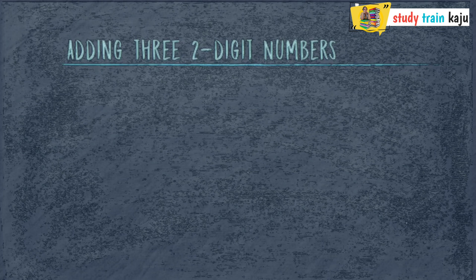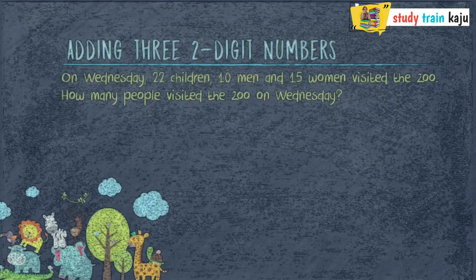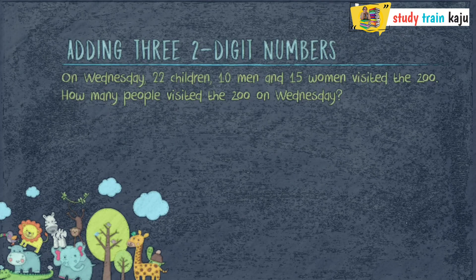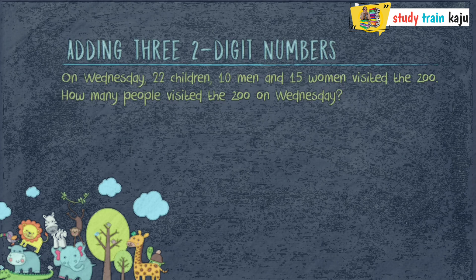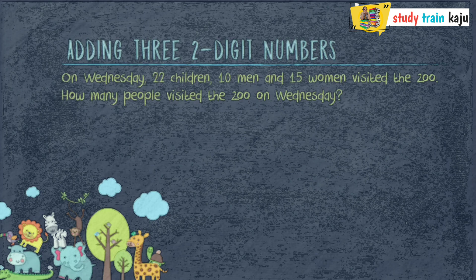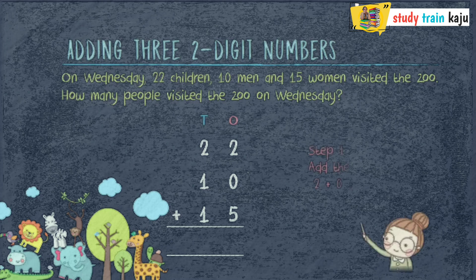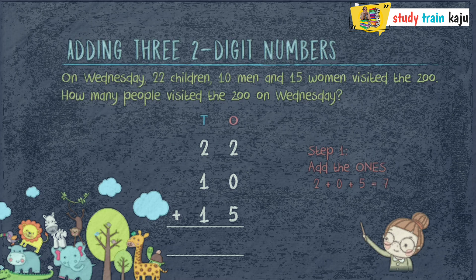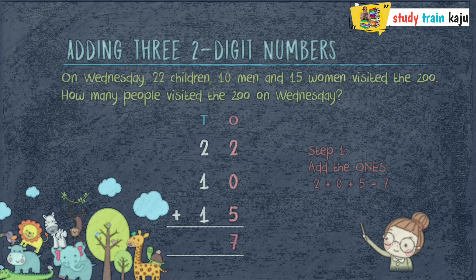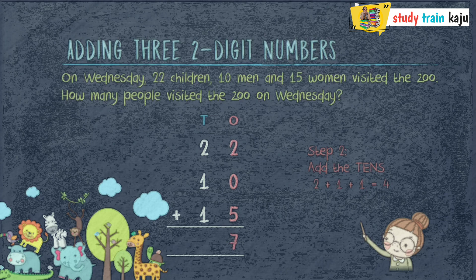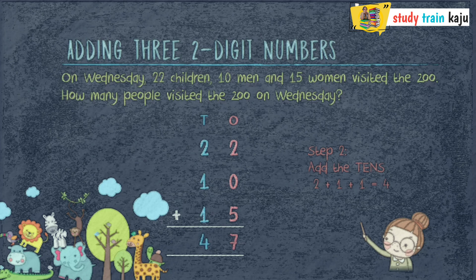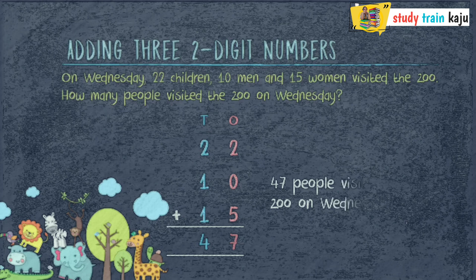Let's learn how to add 3 two-digit numbers. On Wednesday, 22 children, 10 men, and 15 women visited the zoo. How many people visited the zoo on Wednesday? Let's add 22, 10, and 15. Step 1: add the digits at the 1's place — 2 plus 0 plus 5 equals 7. Step 2: add the digits at the 10's place — 2 plus 1 plus 1 equals 4. Therefore, 47 people visited the zoo on Wednesday.